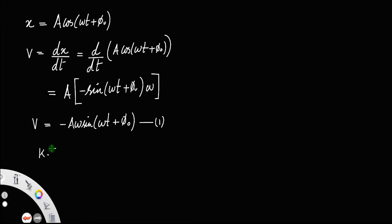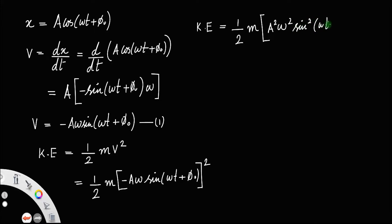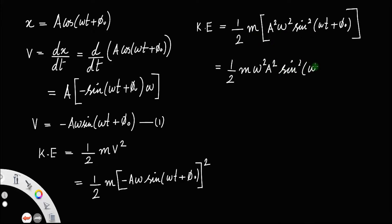Kinetic energy is equal to half mass m into V². So this is equal to ½m times (-Aω sin(ωt + φ₀))². Squaring all the terms, kinetic energy is equal to ½m A²ω² sin²(ωt + φ₀).